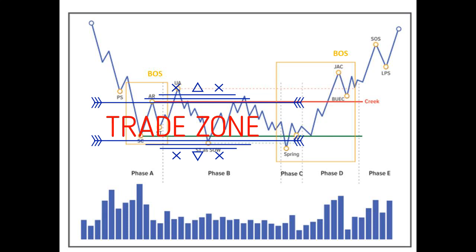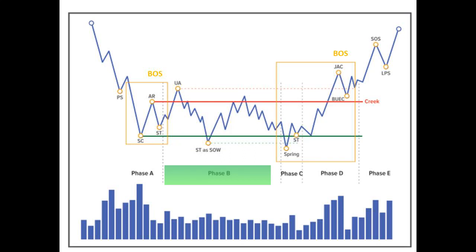Phase A establishes the structure that starts price moving from a downtrend into the beginning of a sideways market. Phase B is the construction of the cause. It starts with a UA (Upthrust Action), a temporary breakout of resistance that re-enters the range — a test at the maximum generated by the AR — followed by a secondary test as a sign of strength.